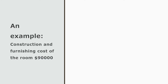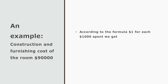Let us consider an example to understand this better. The construction and furnishing cost of a room is $90,000. According to the formula, the hotel will charge $1 for each $1,000 spent on the construction and furnishing of the room. So we get the price of room = $90,000 divided by $1,000, which is $90.